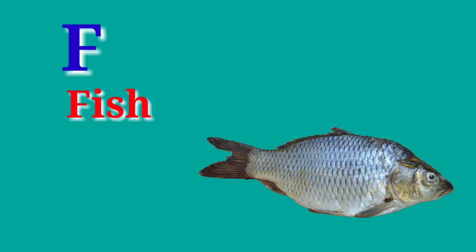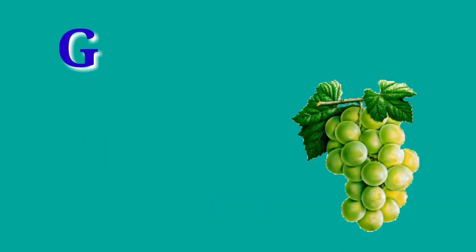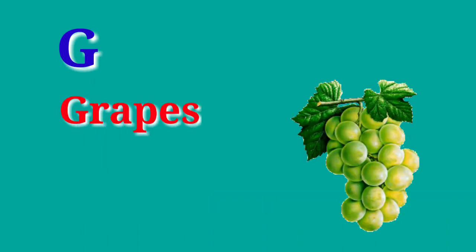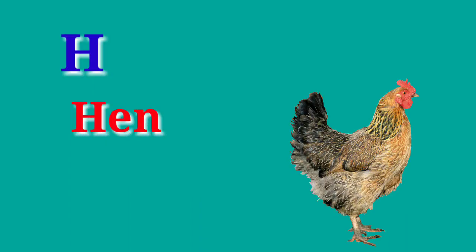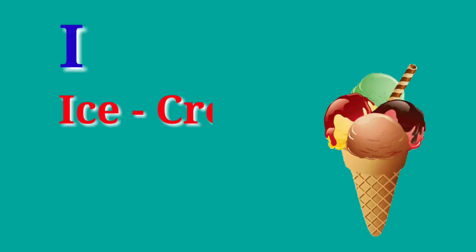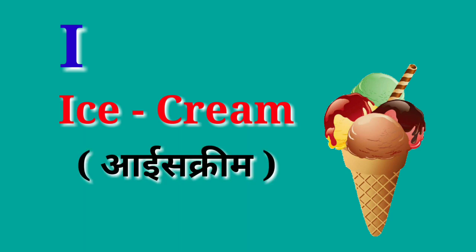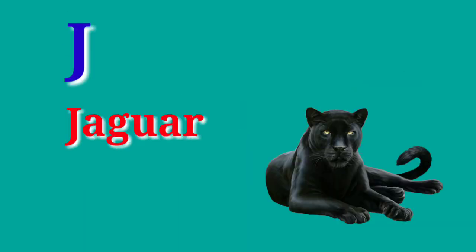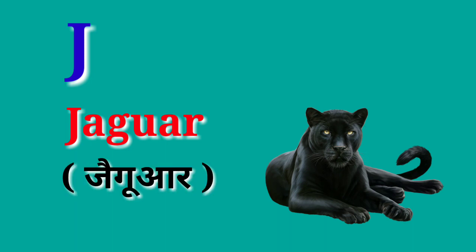F for fish, fish means machli. G for grapes, grapes means angoor. H for hen, hen means murgi. I for ice cream, ice cream means ice cream. J for jaguar, jaguar means jaguar.